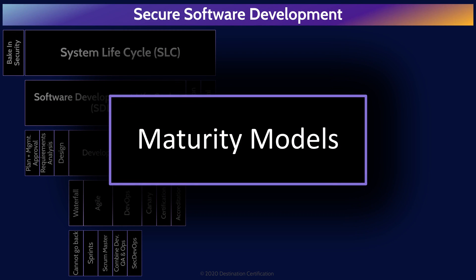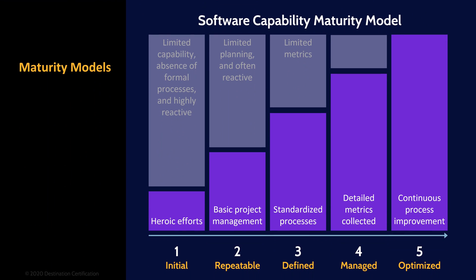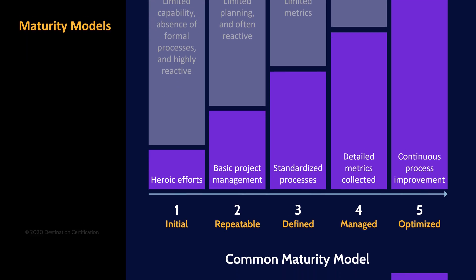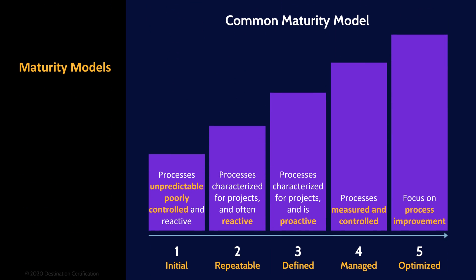Maturity models can be a useful tool in software development and operations. They enable the repeatable evaluation and benchmarking of processes using well-defined levels: starting at the bottom with level 1, called initial or ad hoc, and moving up through 2 (repeatable), 3 (defined), 4 (managed), and 5 (optimized). Level 1 ad hoc basically means you have no processes and this is barely controlled chaos, while level 5 optimized is an uneconomical and unobtainable goal for most organizations. There is a maturity model specific to software development, and a more generalized common maturity model for various process types across an organization. Pay particular attention to the common maturity model, as it is very commonly used and questions about it frequently appear on the exam.